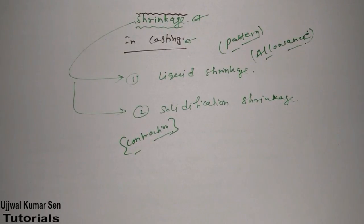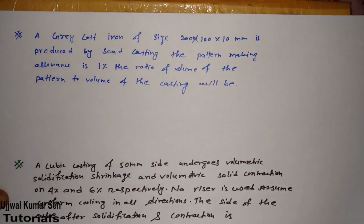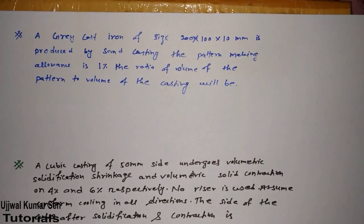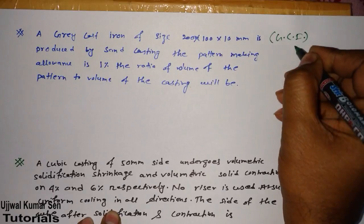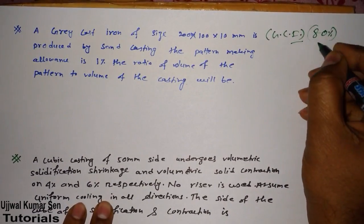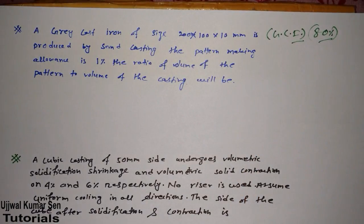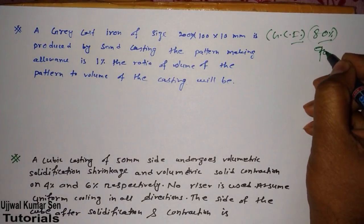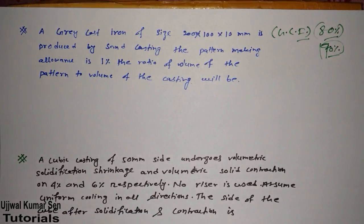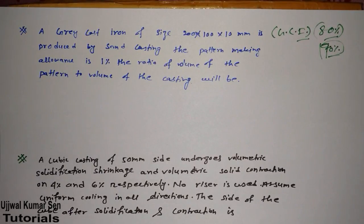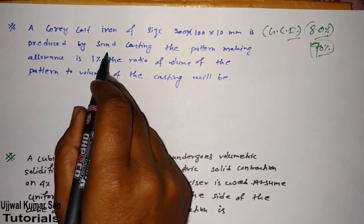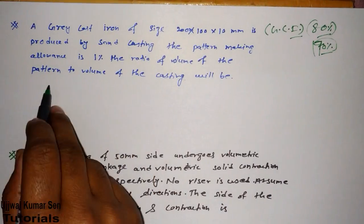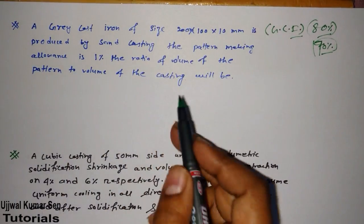These are two questions already asked in GATE. Unfortunately I did not write the options, but I will share everything. This question was asked in GATE to confuse students — I'm sure when it was asked, 70–90% of students who knew the shrinkage concept still got it wrong. Because in the case of gray cast iron, it will not shrink during solidification. The question states: gray cast iron size is given, produced by sand casting, and the pattern-making allowance is one percent — find the ratio of volume of casting to volume of pattern.